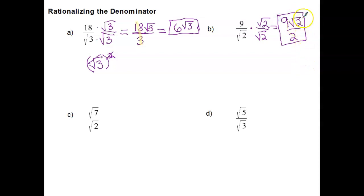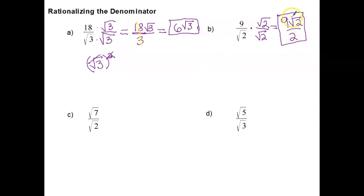Some of you might be thinking, why can't I simplify the radical 2 in the numerator with the 2 in the denominator? Remember, the radical 2 isn't actually the number 2 — it represents the square root of 2, which is 1.4142... So I can't simplify those two because one is the square root of 2 and the other is just the number 2.